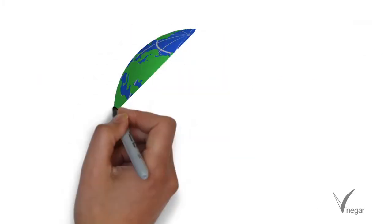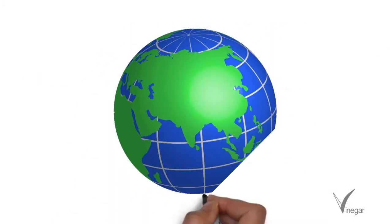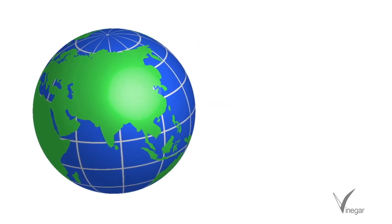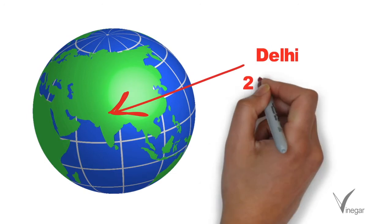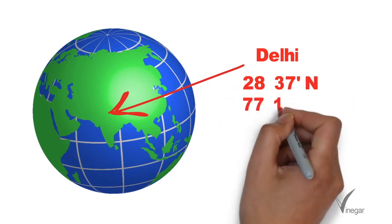Through the intersection of these lines we are able to find the location of any point on earth. For example, the location of Delhi is 28 degrees 37 minutes north and 77 degrees 10 minutes east.